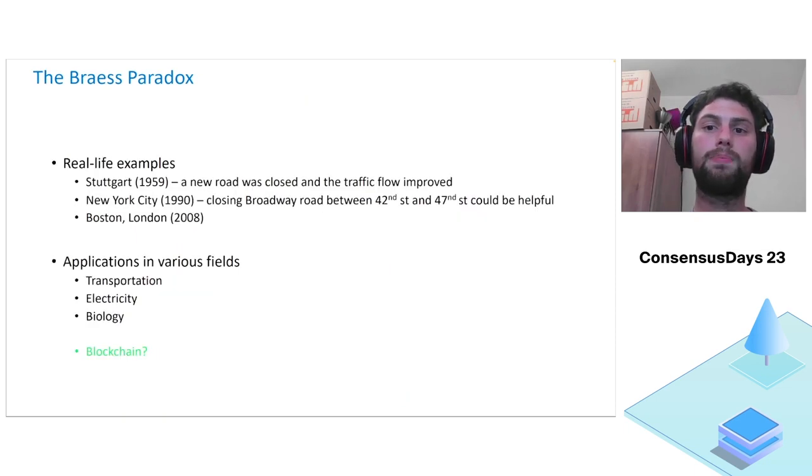Over the years, Braess's Paradox has been shown to be not only a theoretical phenomenon, but it actually appeared in many cases in life. Additionally, the Paradox appears in various fields, including transportation, electricity, and biology. In our paper, we're the first to show that Braess's Paradox appears in blockchain networks and specifically in payment channel networks too.